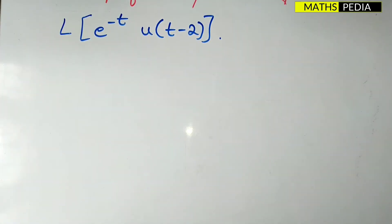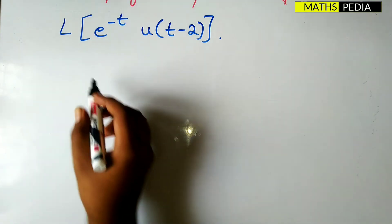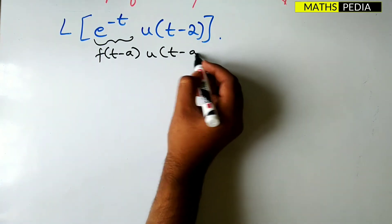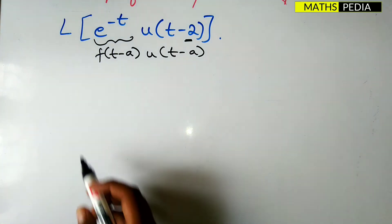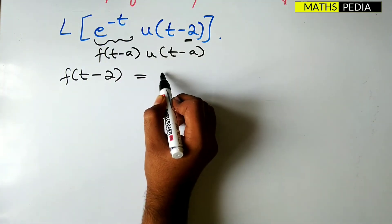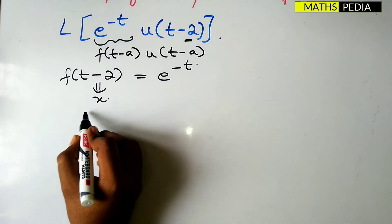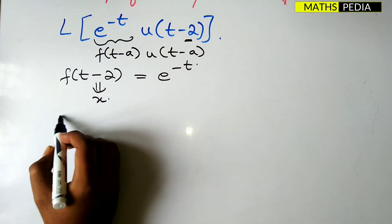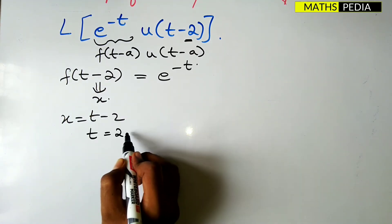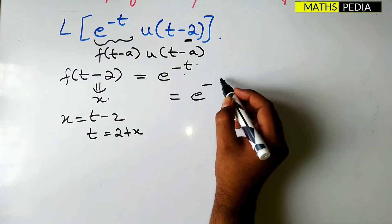The second problem is: find the Laplace transform of e^(-t)·u(t-2). This is of the form f(t-a)·u(t-a) where a = 2. First step: write f(t-2) = e^(-t). Now let t-2 = x, so t = 2 + x.